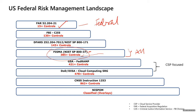Then we have DFARS, which I think is being replaced now with CMMC, and it's more focused on protecting Controlled Unclassified Information. DoD has adopted it as well. It's focused on DoD contractors and requires all DoD suppliers, including those that supply commercial items, to be in compliance. It also has 140 controls. So we now also touch upon NIST, and then you'll keep hearing about FedRAMP.